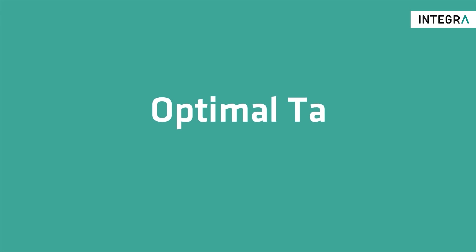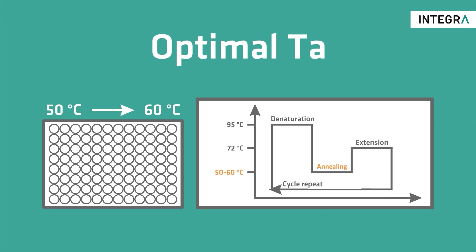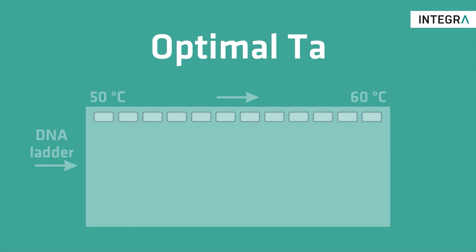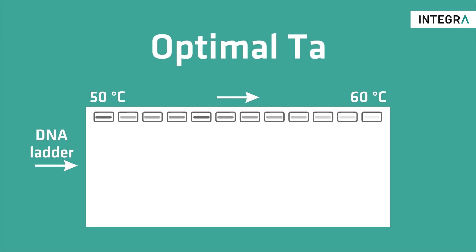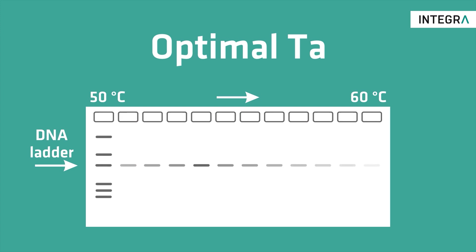To find the optimal annealing temperature, perform a gradient PCR starting a few degrees below the calculated annealing temperature and ending a few degrees above. After amplification, run a gel. The sample resulting in the clearest band contains the largest quantity of PCR product, making its annealing temperature the optimal one for your primers. Usually you'll get a value that is 5 to 10 degrees lower than the primer melting temperature.